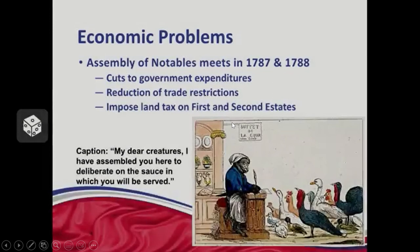By 1787, France's economic problems were so bad that the French Minister of Finance called a meeting with representatives from the first and second estates to figure out how to deal with the economic crisis. His plan had three points: first, have the government cut expenditures — stop spending money; second, reduce trade restrictions to increase revenue through free trade; and third — the most revolutionary part — he proposed that the first and second estates should pay taxes on their land.